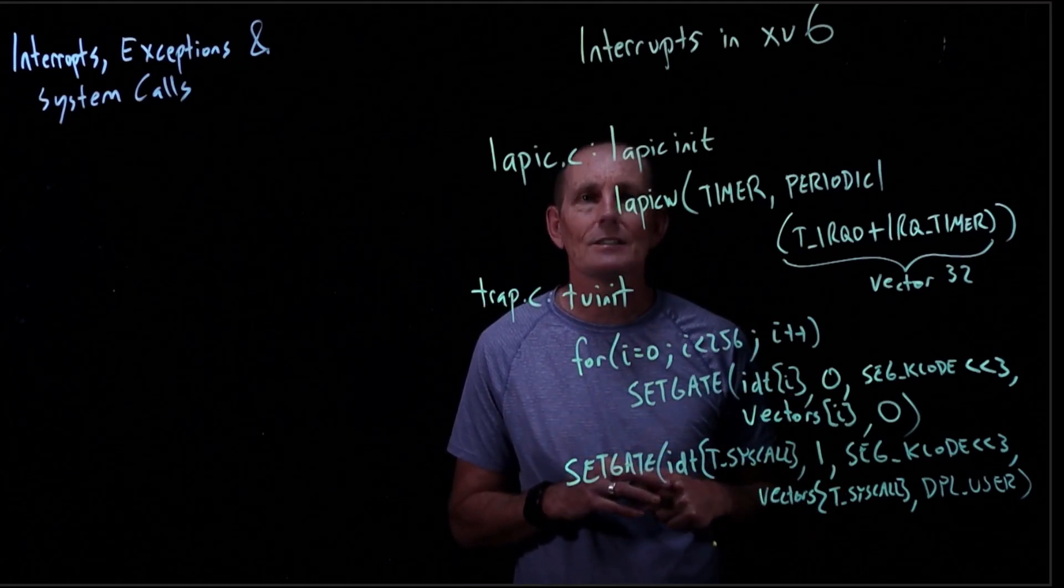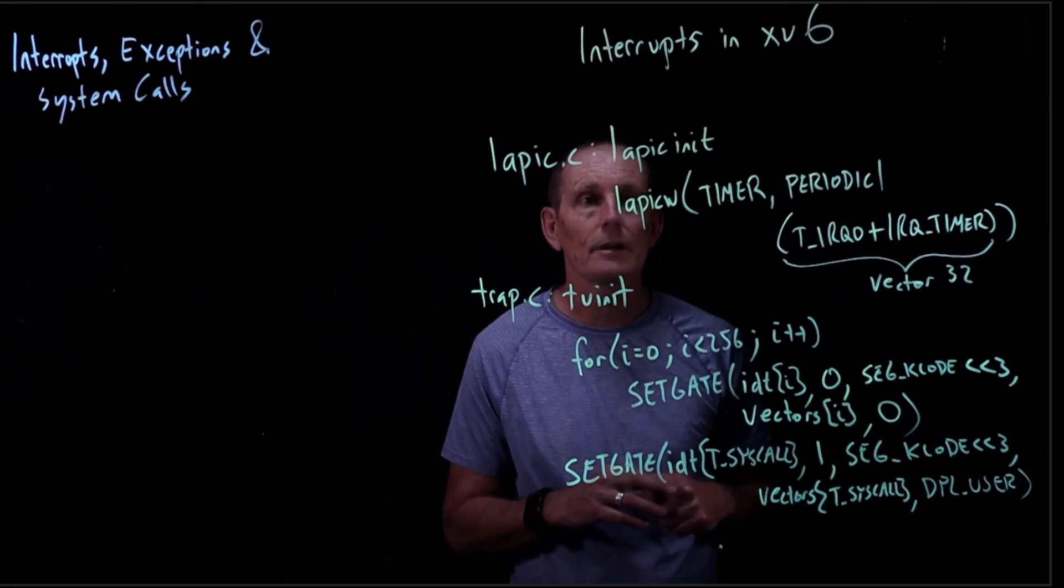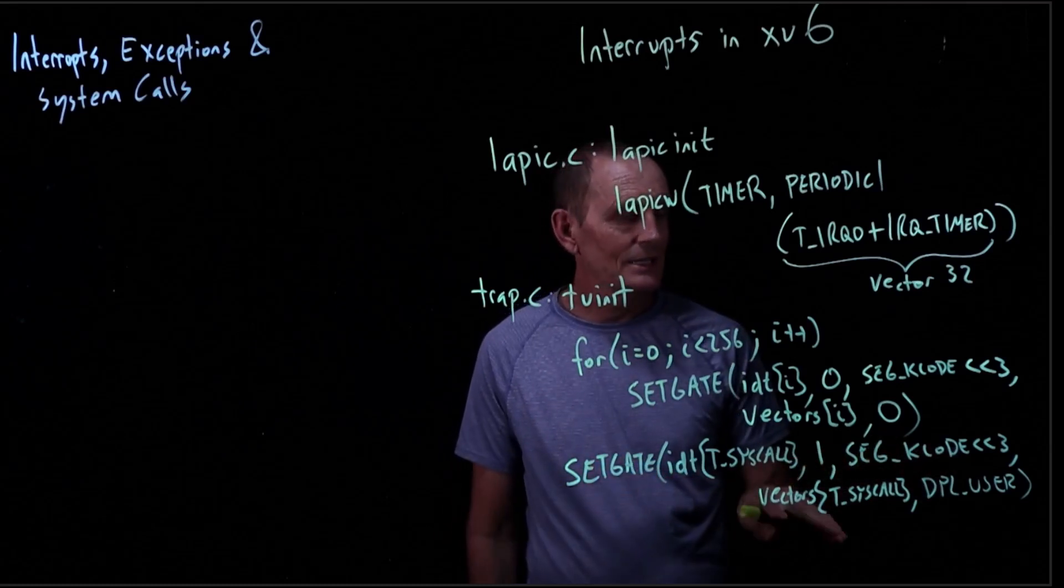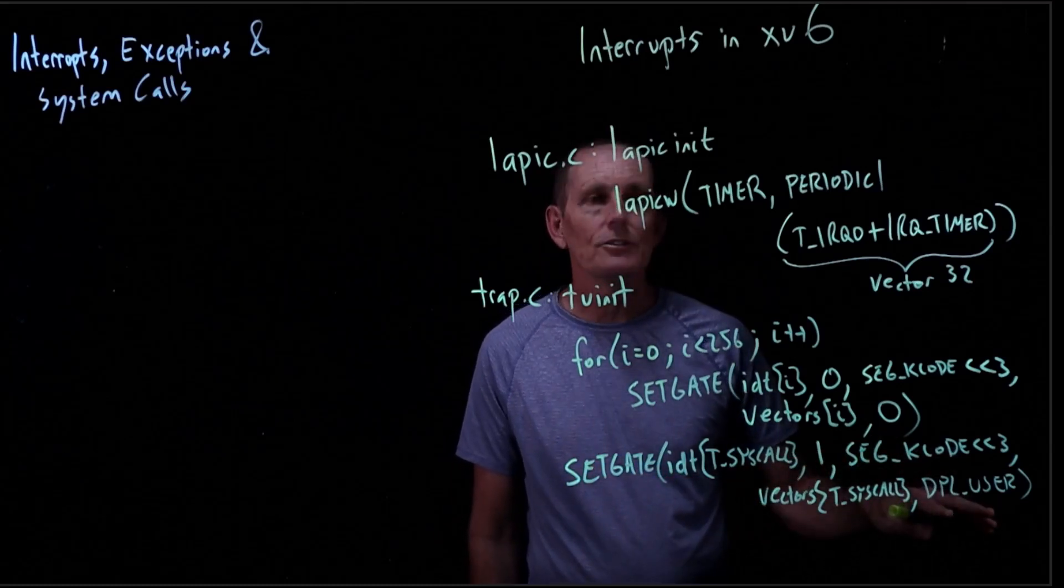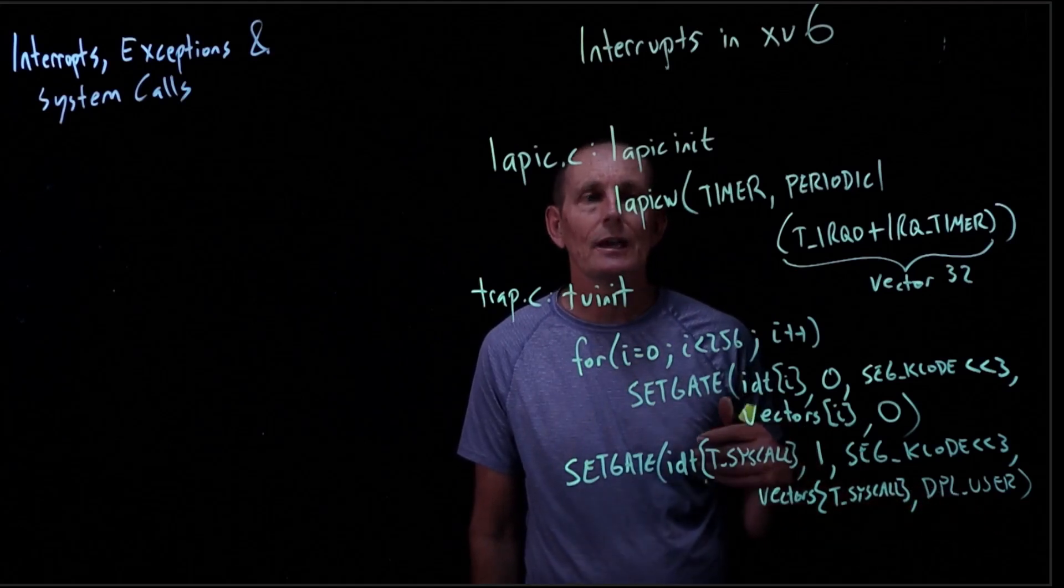Part of the reason for that is system calls can take some time. And so we don't want to just ignore interrupts for long periods of time. And this is the vector we go to. And this also says that this can be generated from user mode. So you can do an int, whatever the system call number is.